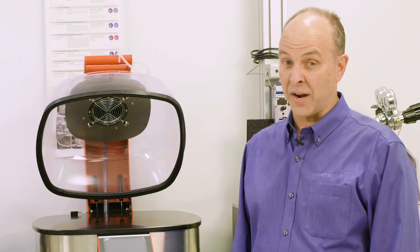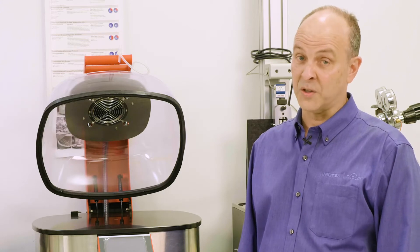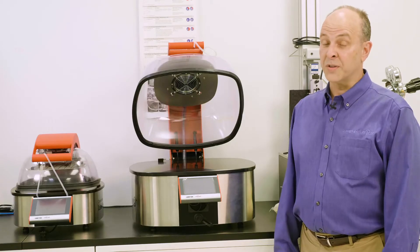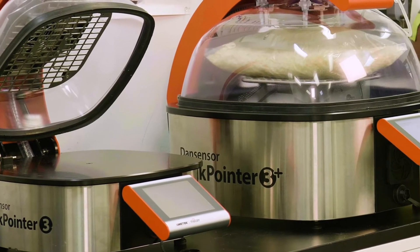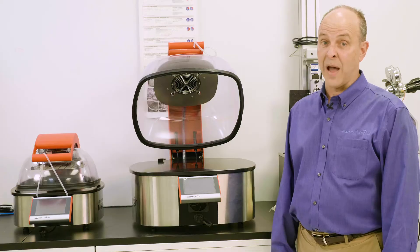Have you ever seen your MAP packaged products sitting on shelf that do not appear to have the same freshness? Or worse yet, have your customers or retailers pointed this out? If so, you should consider the Dansensor Mocon line of package leak detectors to help address this issue and optimize your MAP production process.